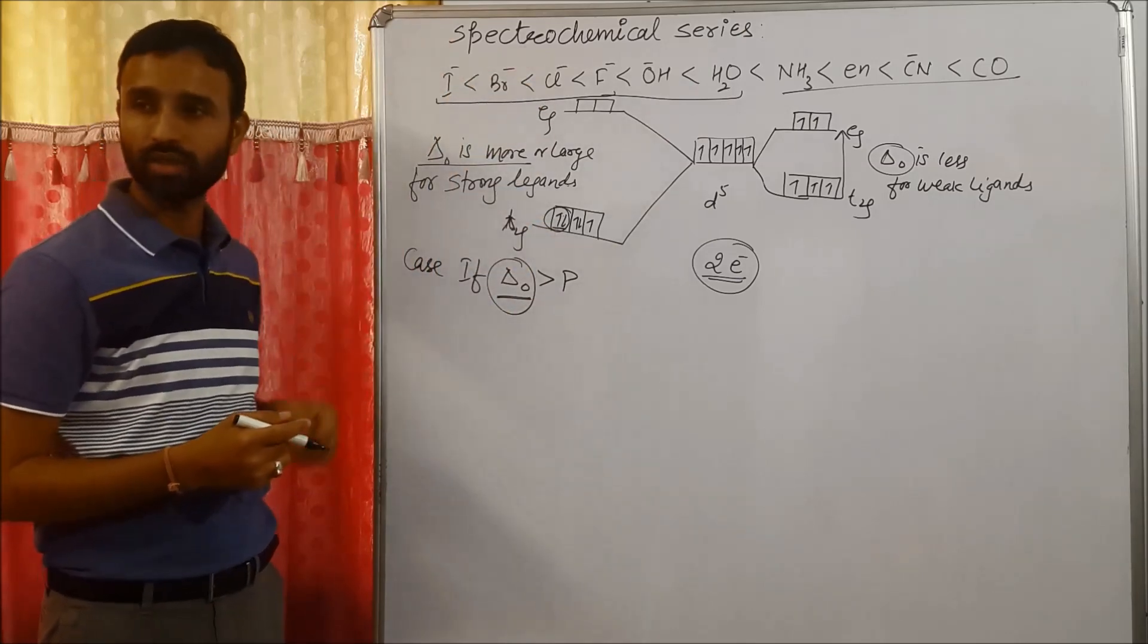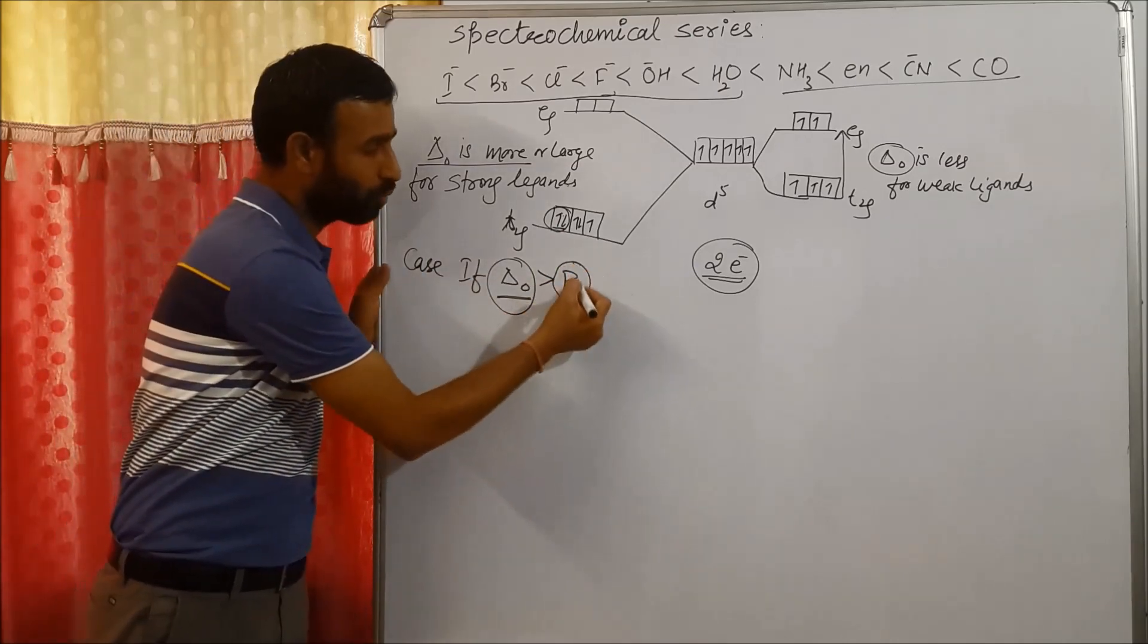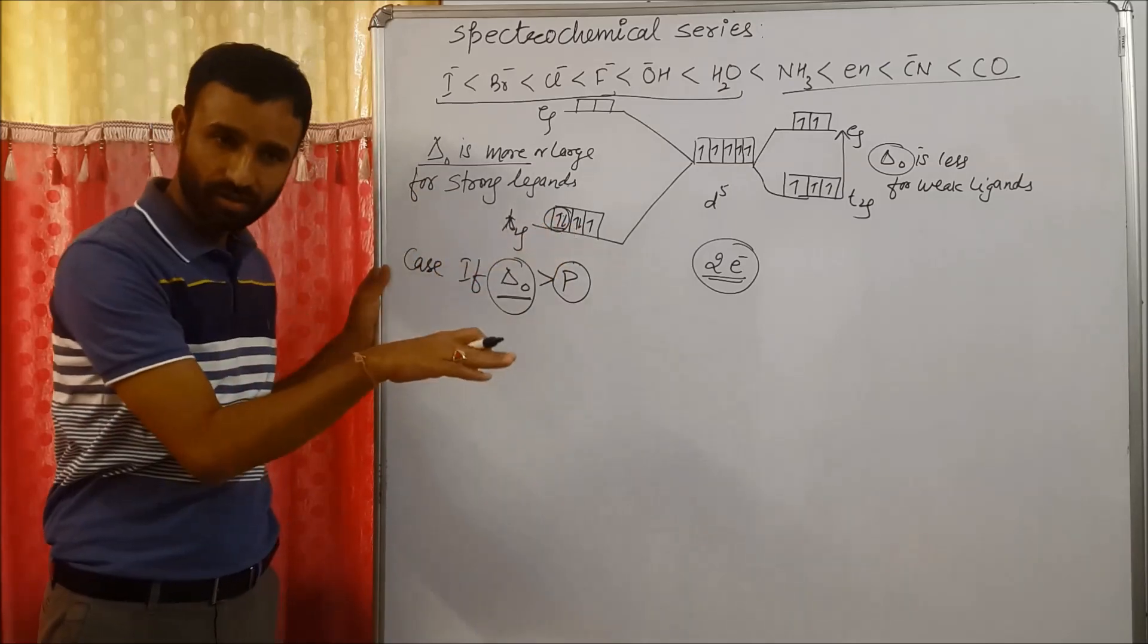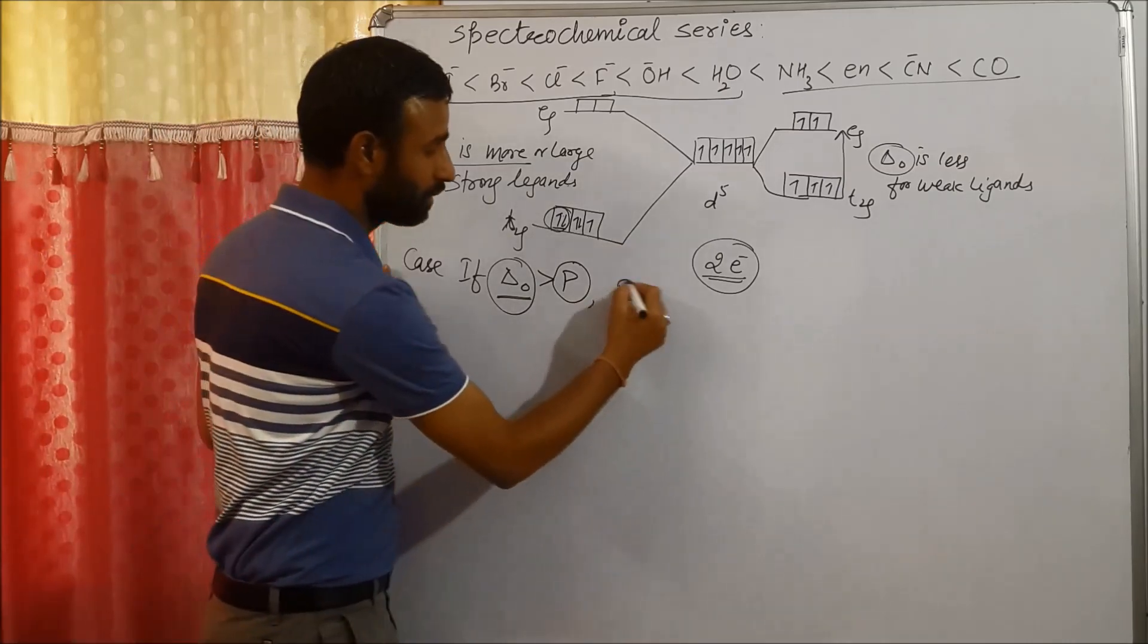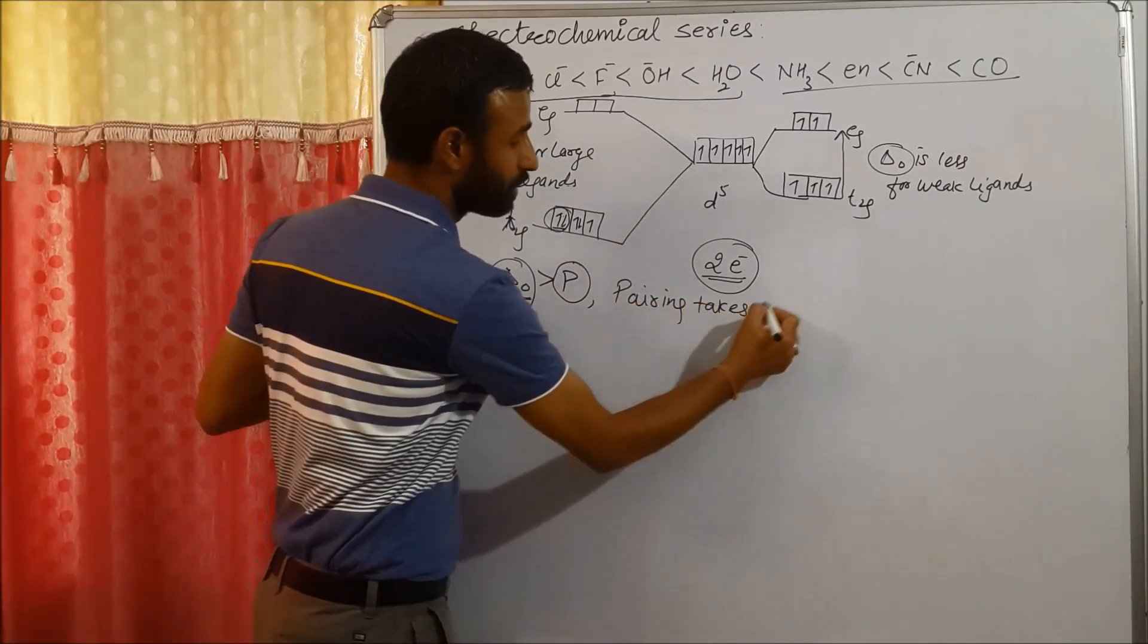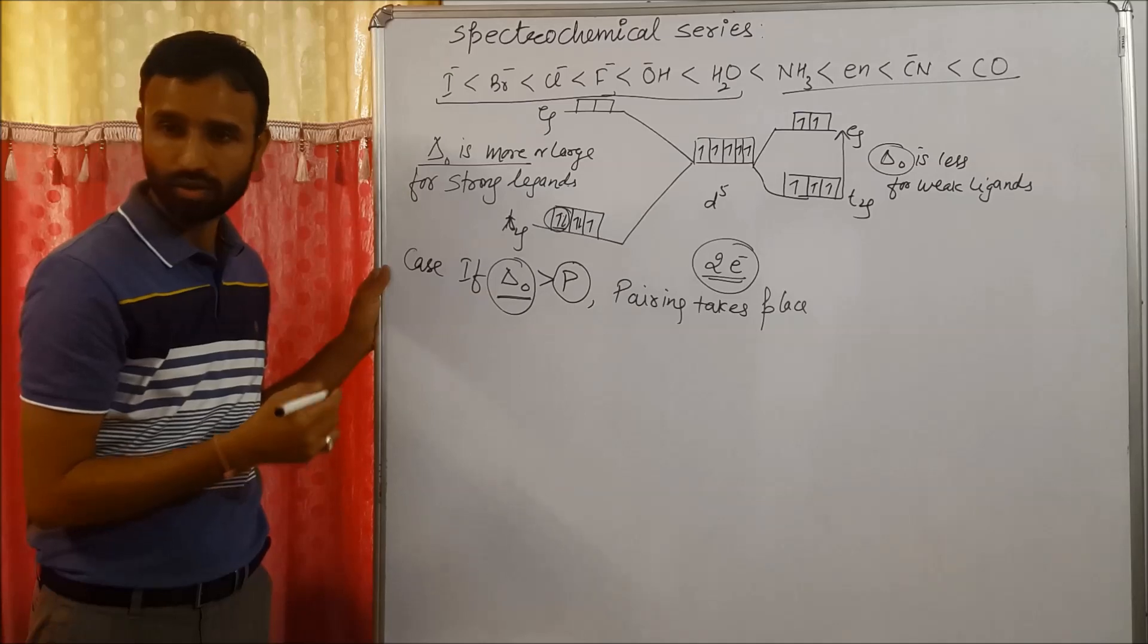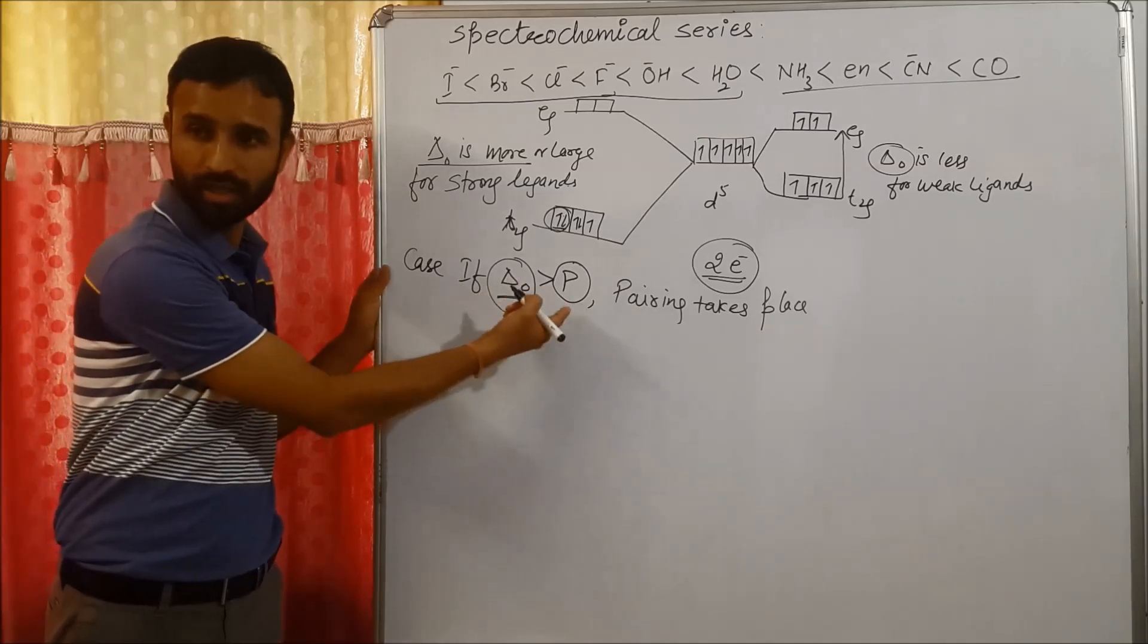energy required to shift the electron is more, but energy required to pair the electron is less. As energy required to pair up the electron is less, that thing takes place. So that means in this particular case, pairing takes place. And that is the case for which type of ligands? Strong. Delta O is greater than P, so it is for strong ligands.